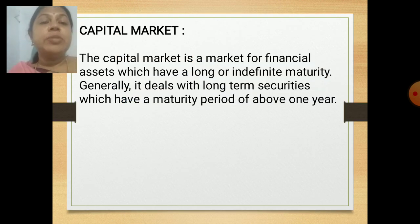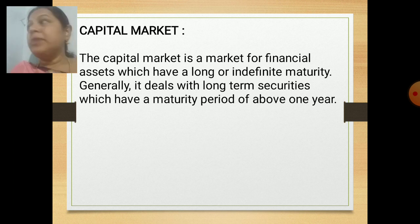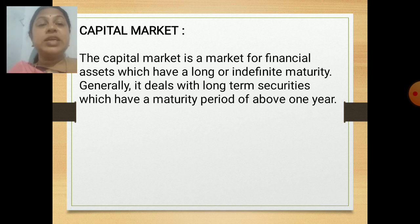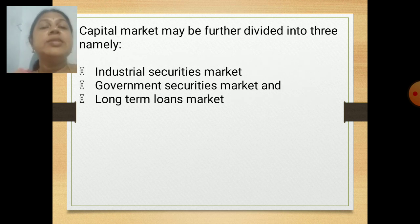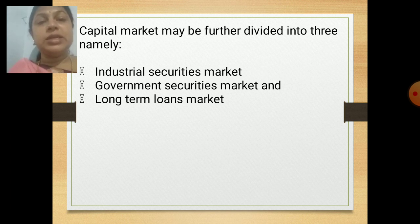The capital market is the market for financial assets which have a long or indefinite maturity. Generally, it deals with long-term securities which have a maturity period of above one year. The capital market is further divided into three categories: the industrial securities market, the government securities market, and the long-term loans market.